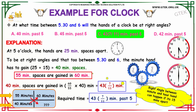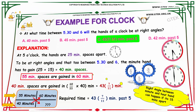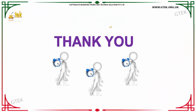So the required time is 43 and 7/11 minutes past 5, that is 5:43 7/11, which is option C. Hence our answer is option C. Thank you so much for learning clocks.